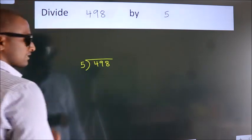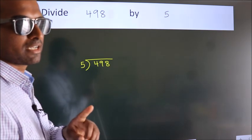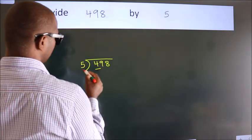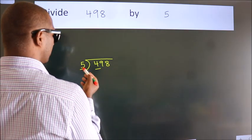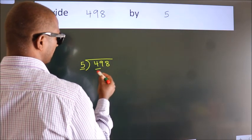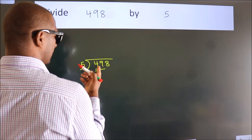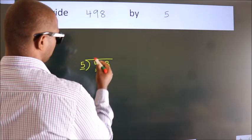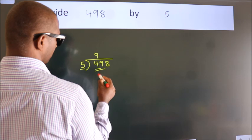This is your step 1. Next, here we have 4, here 5. 4 is smaller than 5, so we should take two numbers: 49. A number close to 49 in the 5 times table is 5 times 9 equals 45.